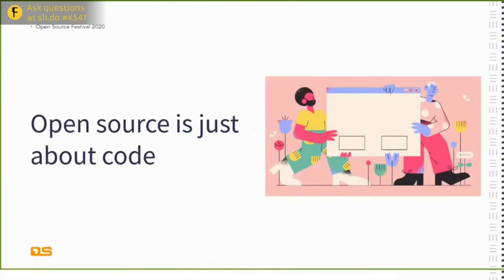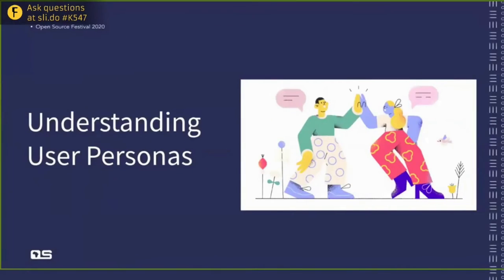Another myth is that open source is just about code. This is really false — open source is not just about code. It encompasses all the planning that goes before writing the code, the process during writing, and the process after. There is design, documentation, marketing, funding, and so much more. So today we're talking about effective documentation and how it is key to the growth of your open source project.